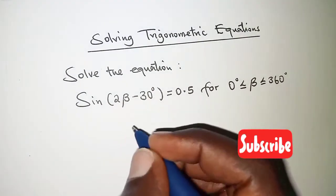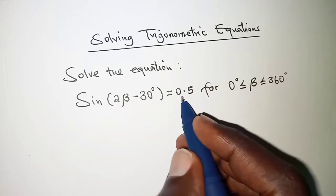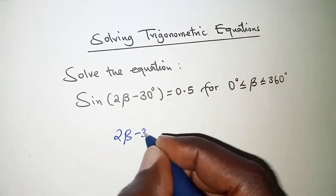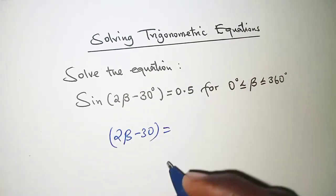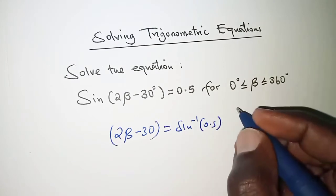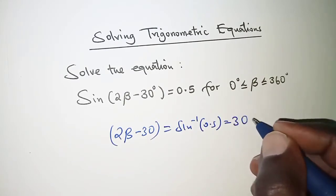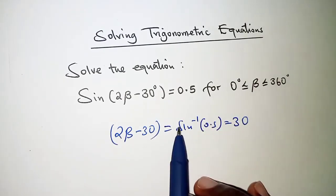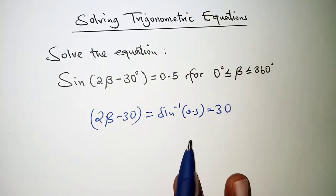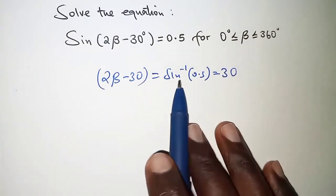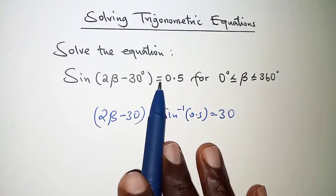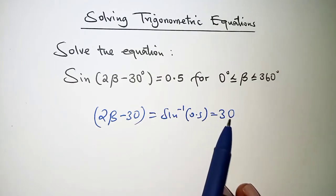In this problem we are first of all going to get the sine inverse of 0.5 so that we have the angle twice beta minus 30. So the sine inverse of 0.5 should be 30. We are interested in the acute value. Suppose it was negative, then assume the negative symbol and just get the sine inverse of the positive value. For this particular case we are lucky it was positive so we just read directly and got 30.